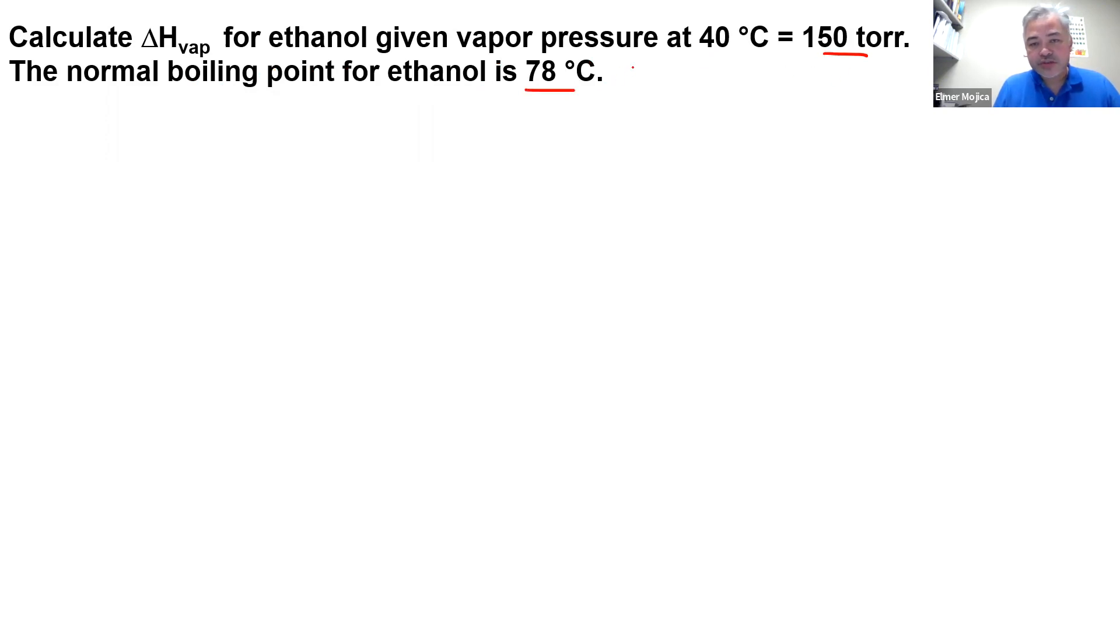So that means you need to get the P₂ here, and at normal boiling point, it's 760 torr. And the next thing that we're going to do, we're going to convert this to Kelvin. So we can have this as 313 Kelvin, and this equals to 351 Kelvin.